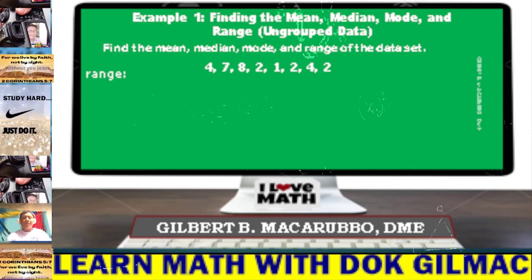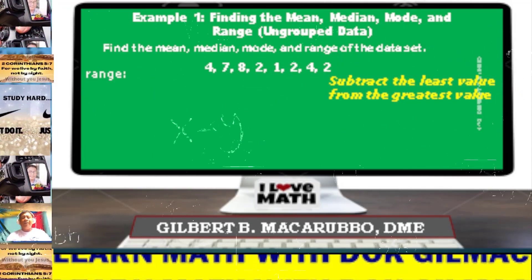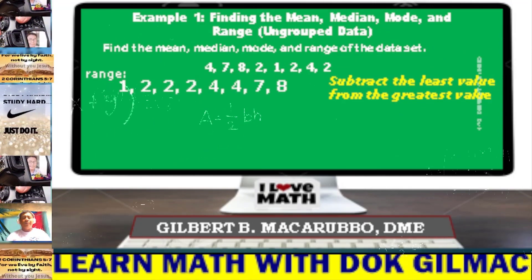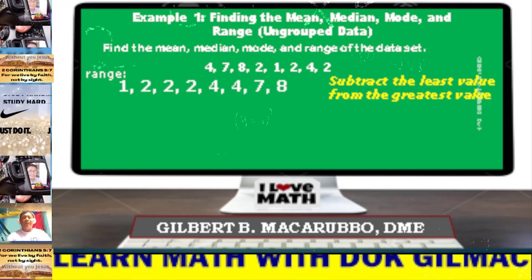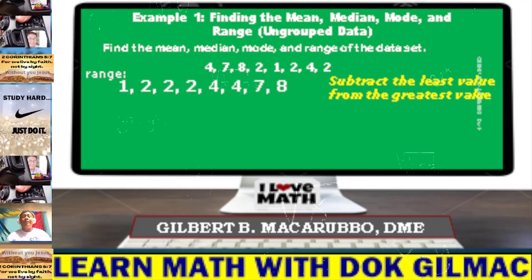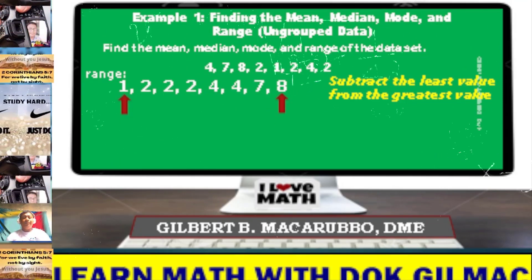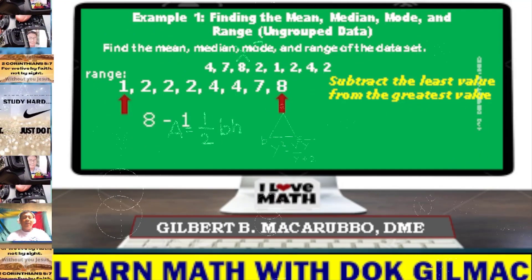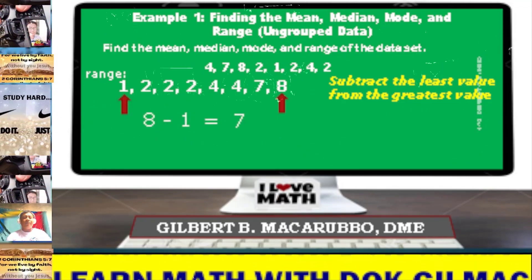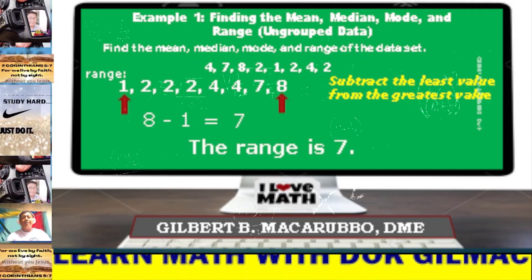This time let's determine the range. Subtract the least value from the greatest value. As you can see, we have the least value which is 1, and the greatest value is 8. Let's get the difference: 8 minus 1 is equal to 7. Therefore, the range is 7.